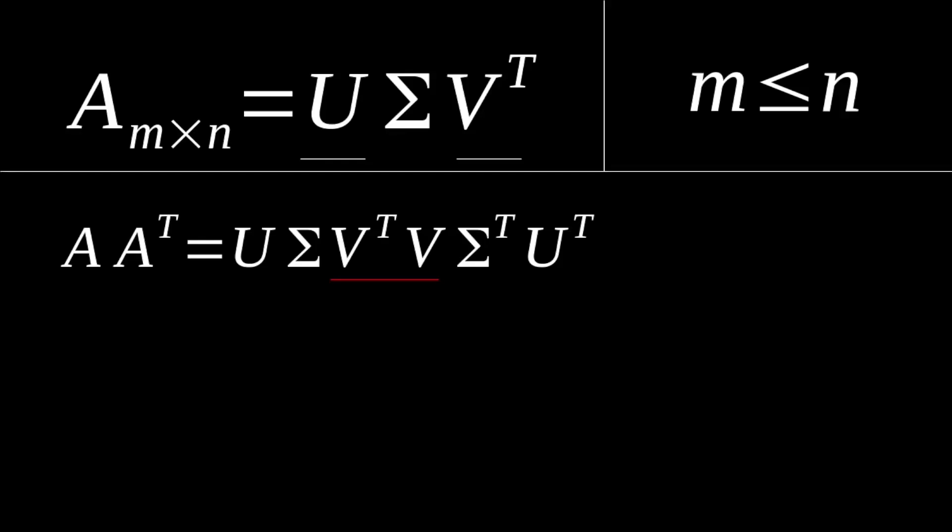So this simplifies down to U sigma squared U transpose. Again, stacking that up to our eigendecomposition of a similar or the same A by A transpose matrix, we can see that the same relationship still holds between lambda and sigma squared. So we're going to compute the singular values in the same way, and this time the eigenvectors are going to be the columns of our U matrix, not our V matrix.